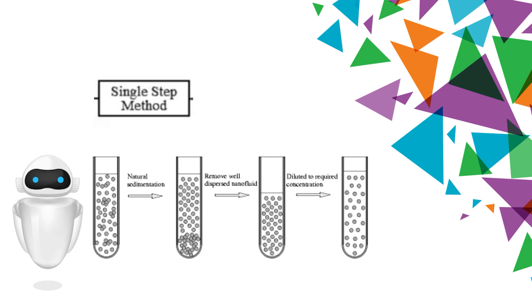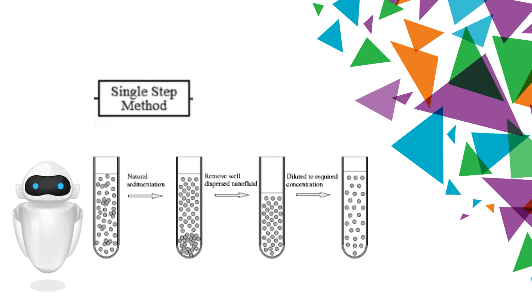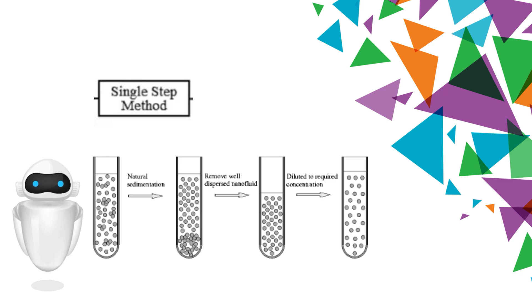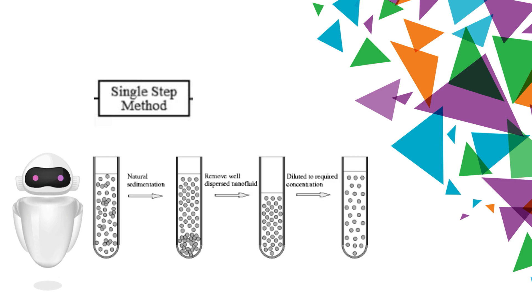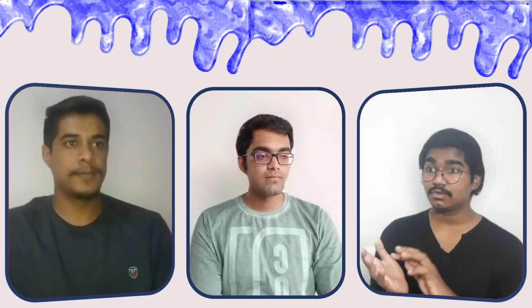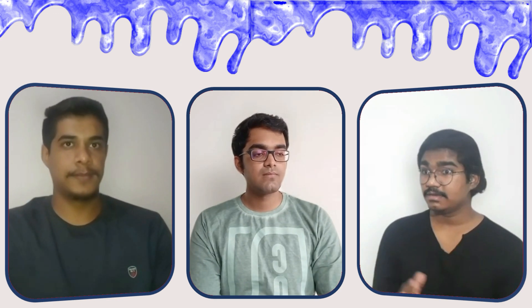The second method is the one-step process. The one-step process simultaneously makes and disperses the nanoparticles directly into the base fluid. This process is favorable because it prevents oxidation of nanoparticles. Drying, storage, transportation, and nanoparticles dispersion are avoided in this method to minimize nanoparticle agglomeration and increase fluid stability, thus reducing the cost of production. Just to make it simple, agglomeration is the sticking of particles to one another or to solid surfaces.